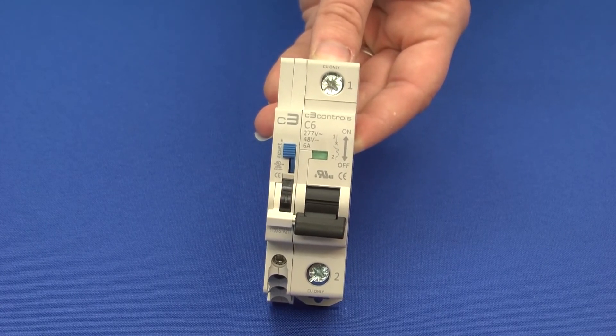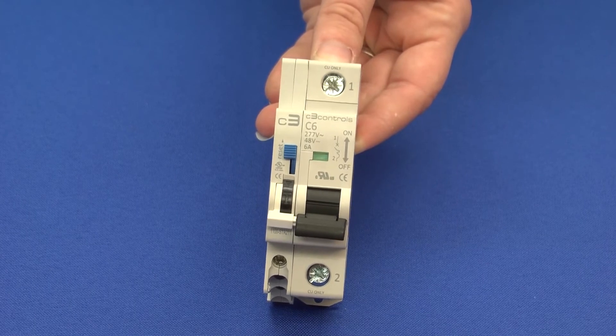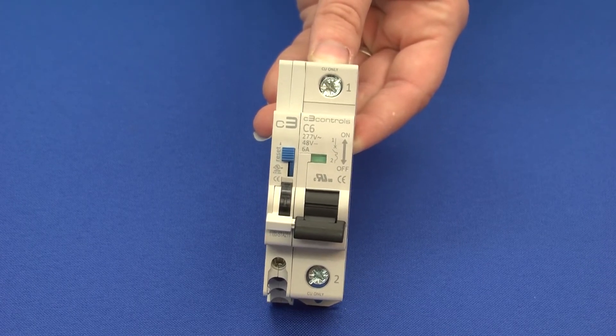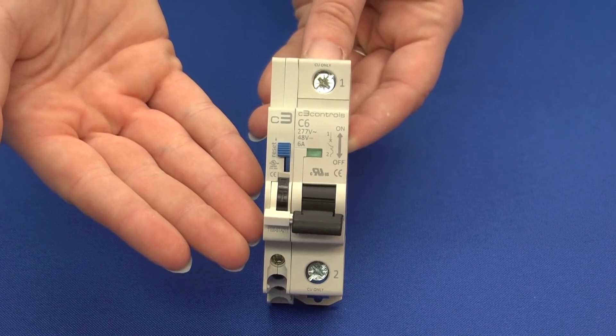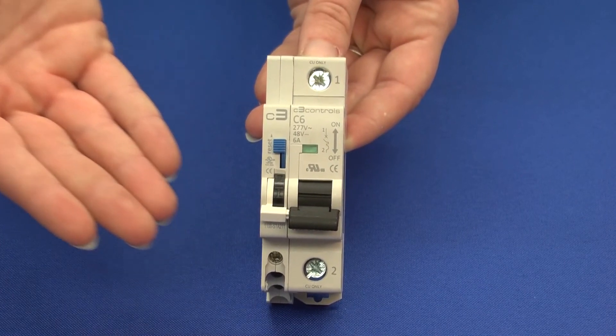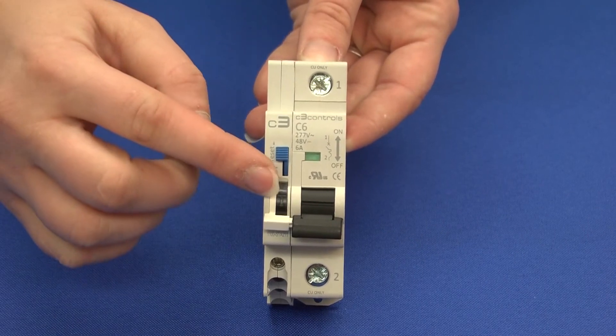This alarm auxiliary is also equipped with a test button that can simulate a trip of the circuit breaker. First, make sure the circuit breaker is in the off position and contacts are open. The test button will be marked with a T.